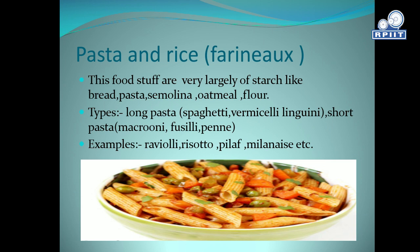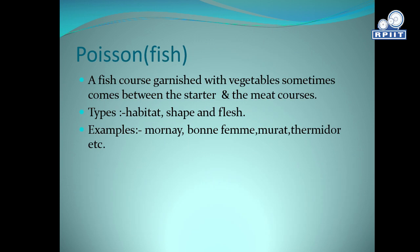Poisson — Fish. A fish course garnished with vegetables sometimes comes between the starter and the meat course. Fish is classified by habitat, shape, and flesh. Examples include bonne femme, murat, and thermidor.